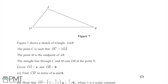In this question we're given figure 7, which is a sketch of a triangle OAB, along with some information about various points. We'll come back to this in a minute as we want to copy our diagram down and annotate it to help us move forward with the question.